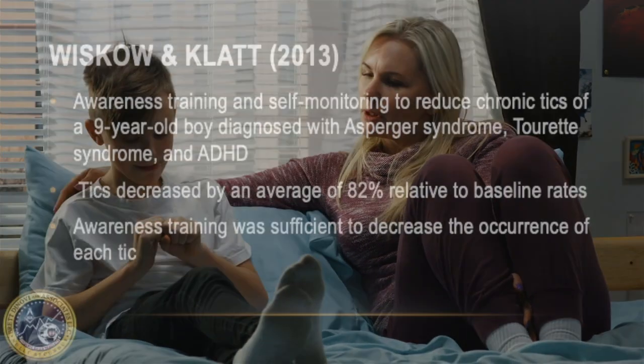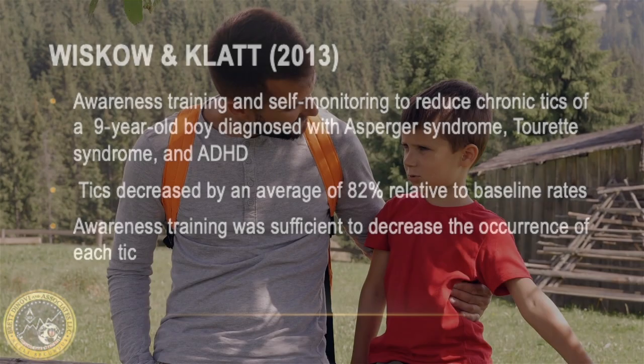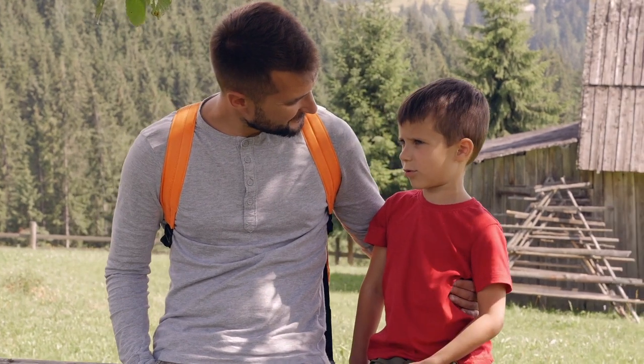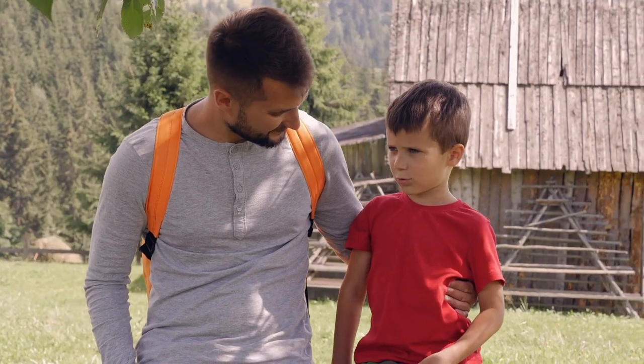Awareness training has also been used to successfully reduce tics for children with chronic motor tics. The Winslow and Klatt article included awareness training and self-monitoring to reduce chronic tics of a nine-year-old boy with Asperger's syndrome, Tourette's syndrome, and attention deficit disorder. At the beginning of each session, the therapist identified the target tic and indicated that the participant should be aware of it. Next, the therapist and participant defined the target tic. Then, the therapist and participant simulated and identified each tic occurrence.